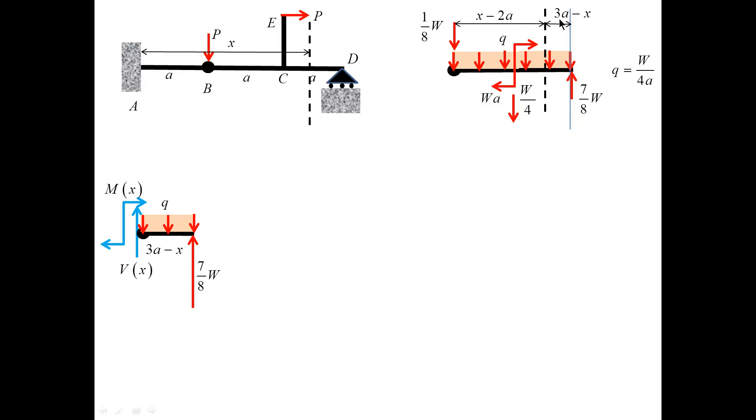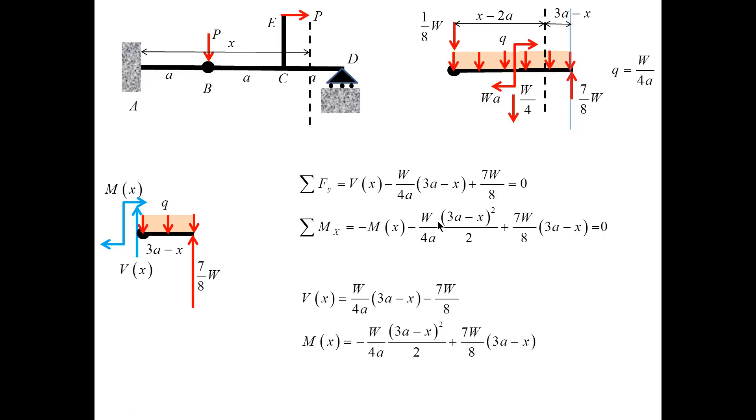Finally, I make a cut somewhere between c and d. I'm looking now at the segment b, d, but I would like to look at the cut from the right, so that the segment that I consider has the length 3a minus x, so it is this segment. For this segment, the equilibrium equations are given here, and the equations for v of x and m of x follow immediately.